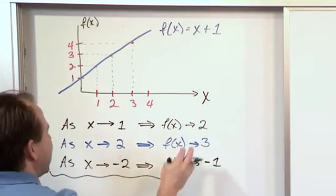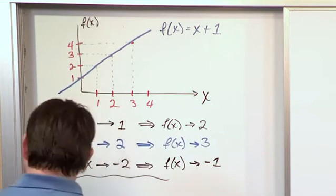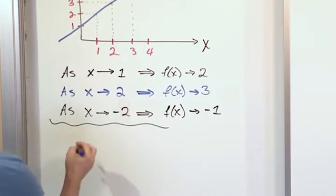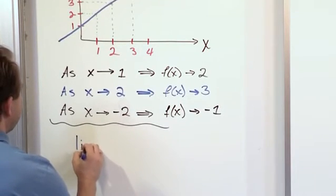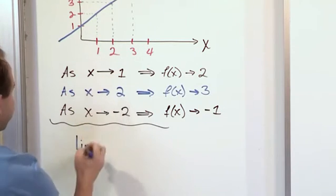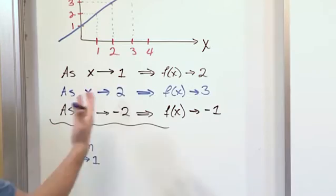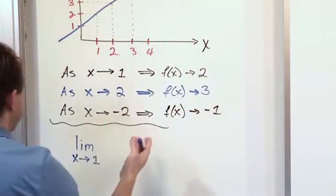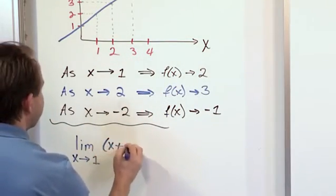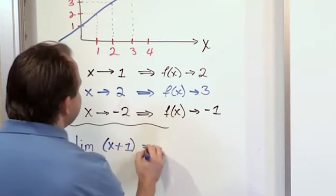The way I've been writing this is good for explanation, but that's not actually how you write a limit in calculus. The formal way is: you write the word 'lim', which means limit. For the first example, you say: the limit as x approaches 1 of x + 1 — specifying the function — equals 2.